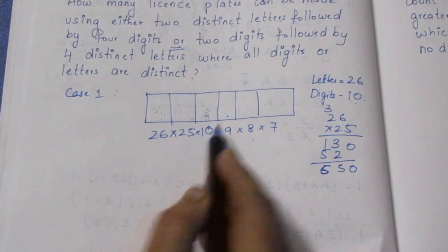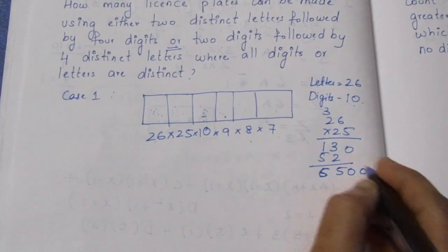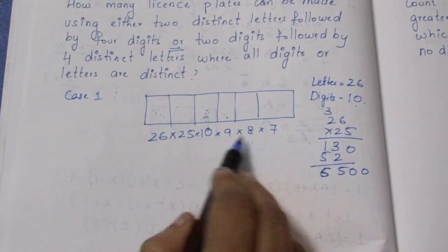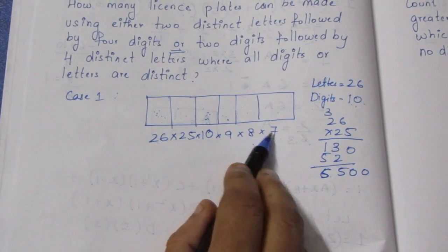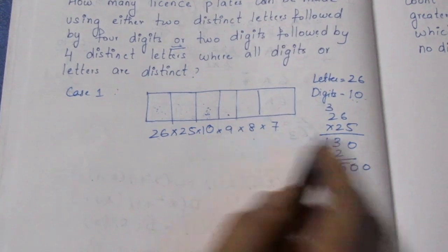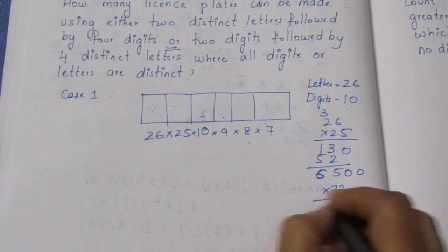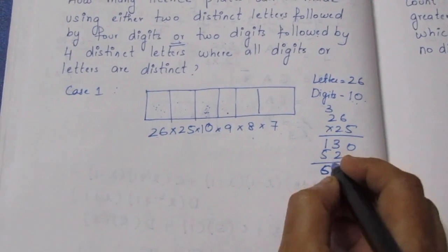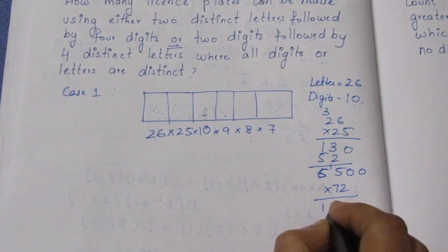6 x 5 = 0, 2 multiply 6 = 500. 9 x 7 = 63, 9 x 8 = 72, multiply 0, 10.